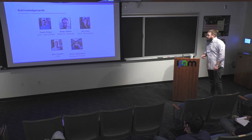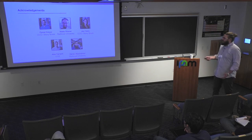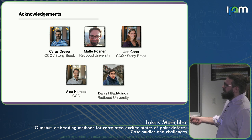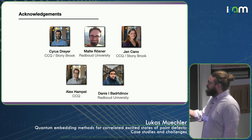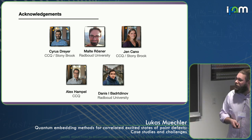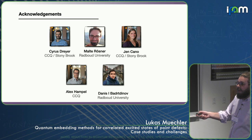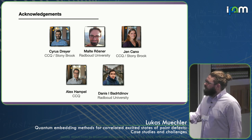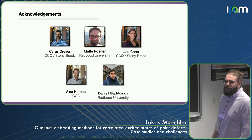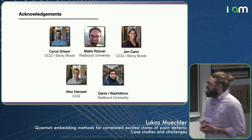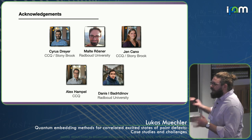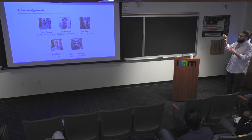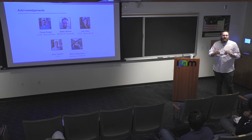I couldn't have done this alone. There are people at CCQ and other places, and one reason I'm showing this is because I think it's a very interesting mix of people. There's Gen Cano and me, coming more from the symmetry and topology side. There's Malte Rezner from the CRPA and DMFT side, and Alex Hample as well. But really the person who spearheaded this whole project was Cyrus Dreyer, who's a professor at Stony Brook with a co-appointment at CCQ.